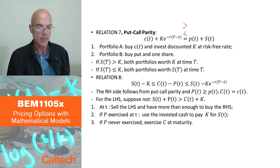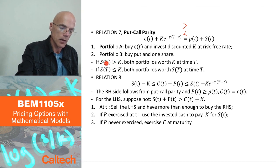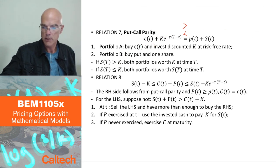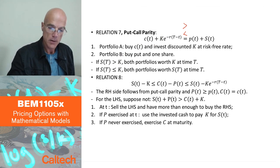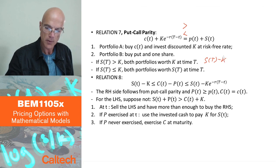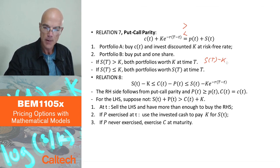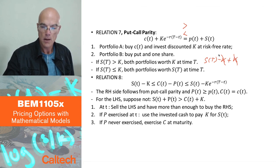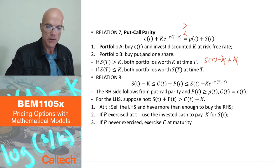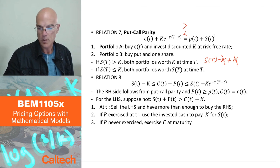Payments only happen at maturity, so I check two scenarios. If S(T) > K, the call is in the money: Portfolio A pays S(T) − K plus K from the bank, giving S(T). Portfolio B: the put is out of the money (worth zero), and the share is worth S(T) — equal. If S(T) < K, the call is zero and the bank still has K, so Portfolio A pays K. Portfolio B: the put pays K − S(T), plus the share S(T), which again equals K.